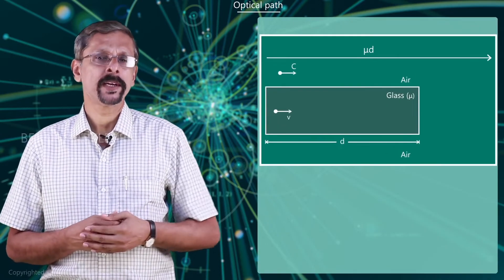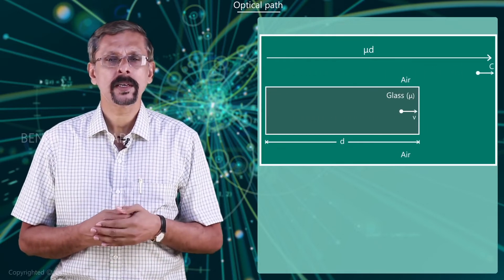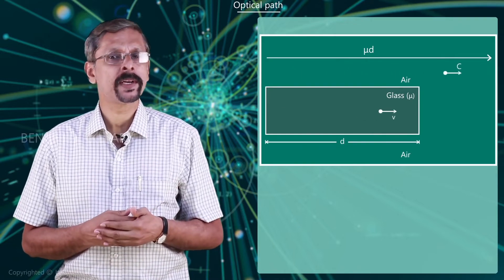Imagine two beams of light in which one passes through air whereas the other passes through a different material having a refractive index mu.